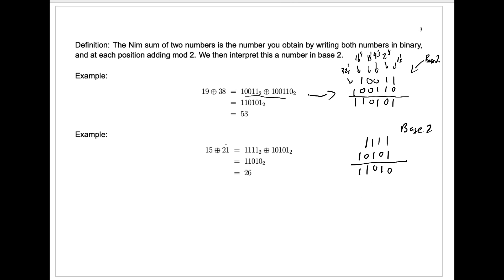So the Nim sum of 15 and 21 is the number whose base 2 representation is 1, 1, 0, 1, 0, and that's just 16 plus 8 plus 2, which is 26.